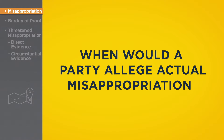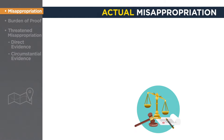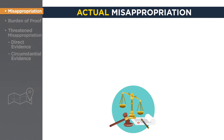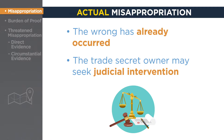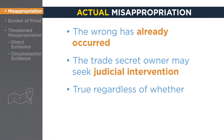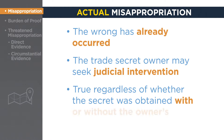When would a party allege actual misappropriation? In cases of actual misappropriation, the wrong has already occurred and the trade secret owner may seek judicial intervention concerning any legal rights that were violated. This is true regardless of whether the misappropriator obtained the secret without the owner's consent or originally with consent but later used the secret for the misappropriator's own gain.